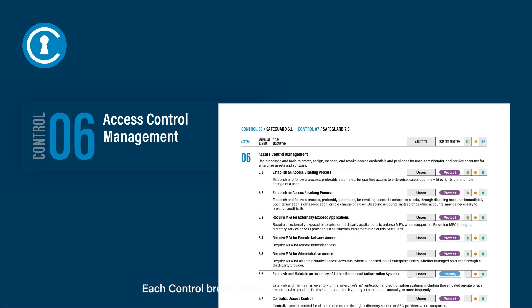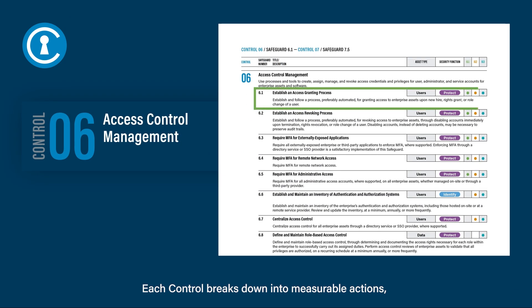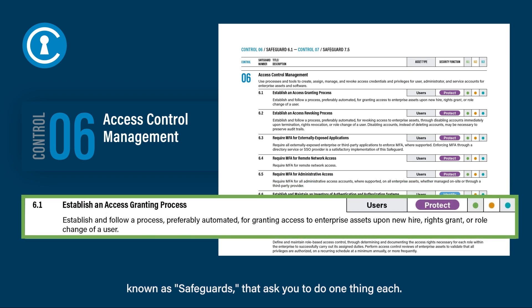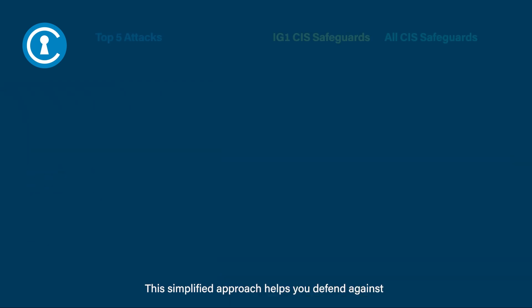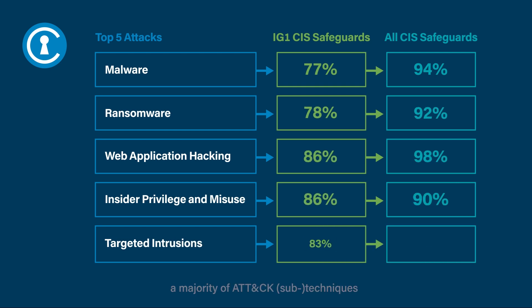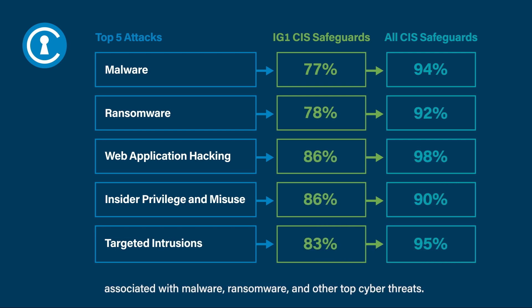Each control breaks down into measurable actions, known as safeguards, that ask you to do one thing each. This simplified approach helps you defend against a majority of attack sub-techniques associated with malware, ransomware, and other top cyber threats.